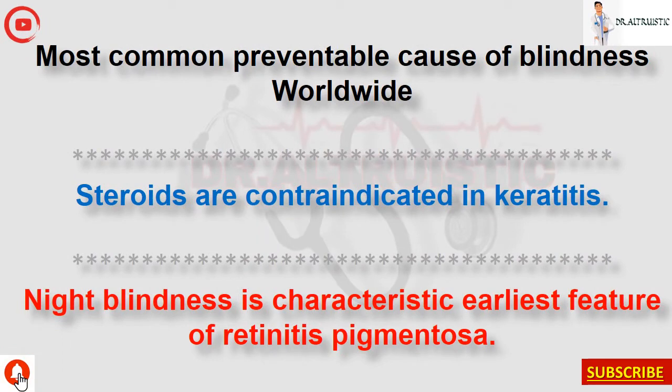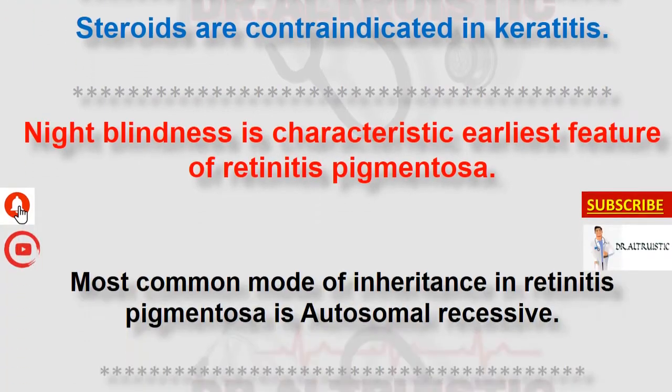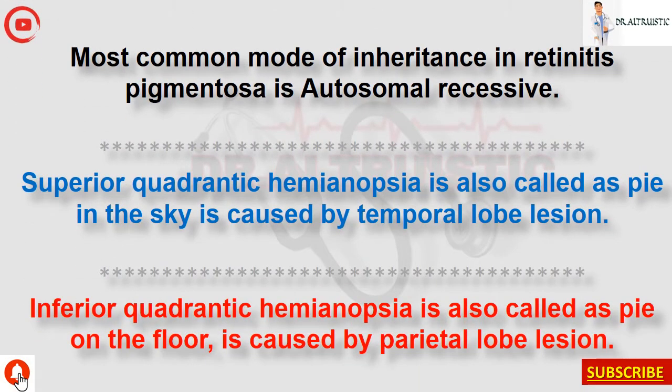Most common preventable cause of blindness worldwide. Steroids are contraindicated in keratitis. Night blindness is the characteristic earliest feature of retinitis pigmentosa. Most common mode of inheritance in retinitis pigmentosa is autosomal recessive.